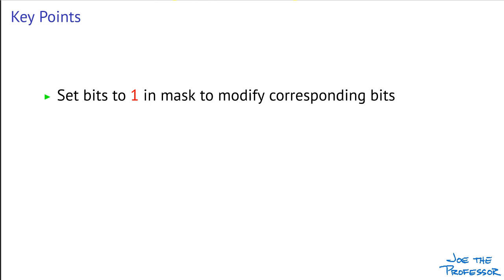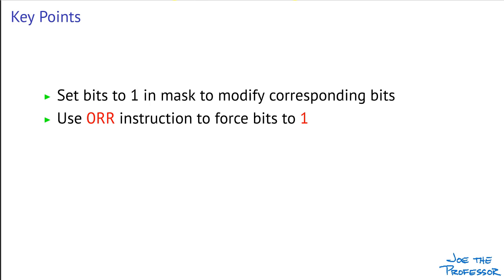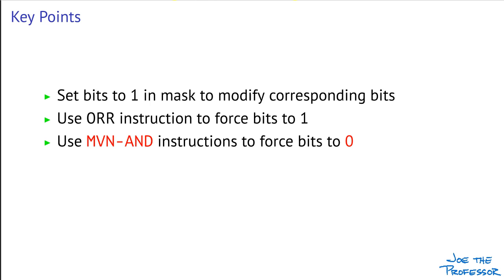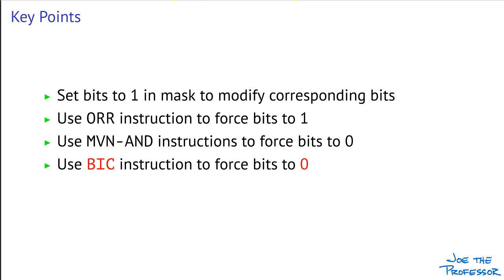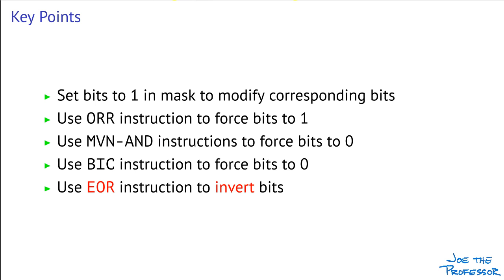What are the key points about bit banging? Remember that we usually set a bit to a 1 in a mask to modify corresponding bit positions in some other register. We use the OR instruction or OR operator to force bits to 1. In C and assembly language, we can use a MOVE NOT AND sequence to force bits to 0, but in assembly language we can get by with just using the bit clear instruction. And finally, the exclusive OR instruction or exclusive OR operator is used to invert specified bits. Now you know how to do bit banging.